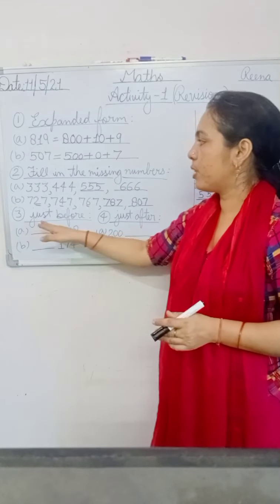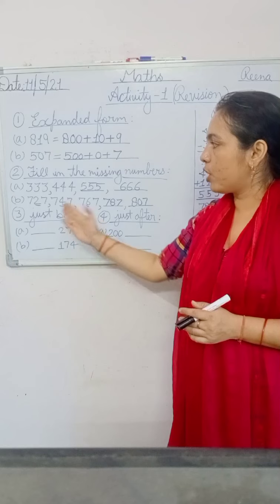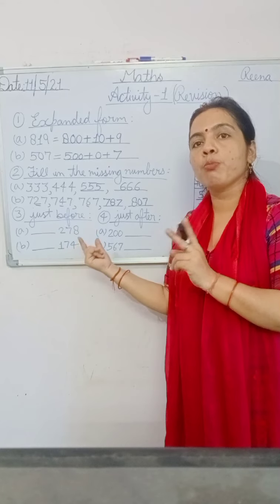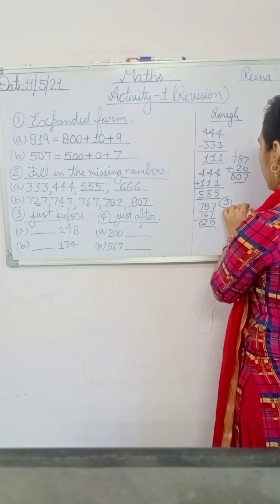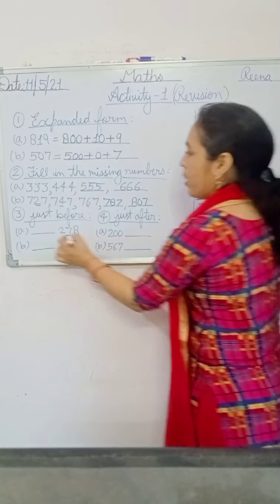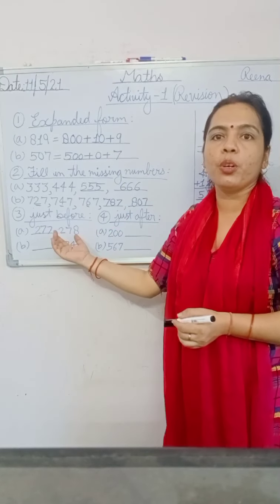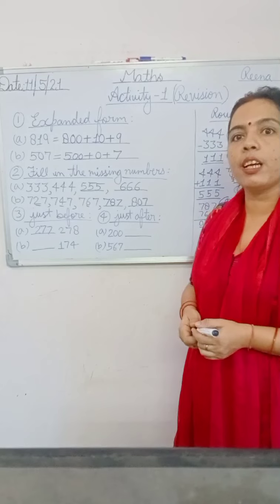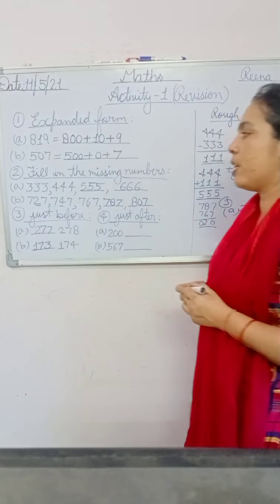Question number three is 'just before.' Write the just before number. For just before, we subtract 1 from the given number. For part C, 278 minus 1: eight minus one is seven, seven, two — so 277 is the just before number of 278. And the just before number of 174 is 173.